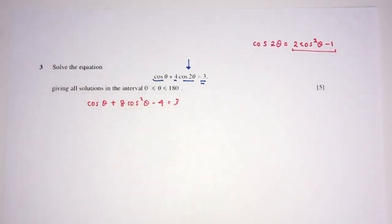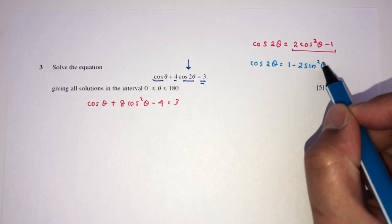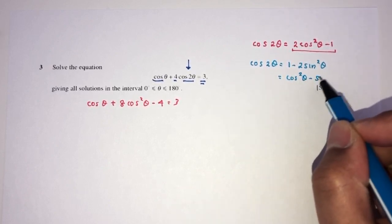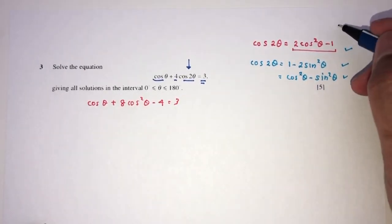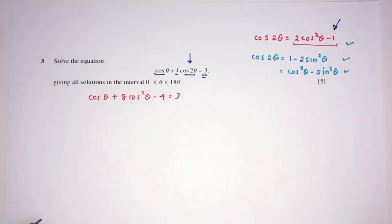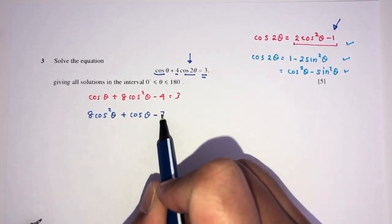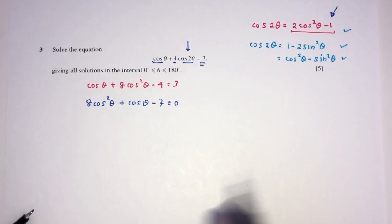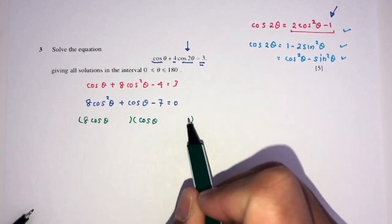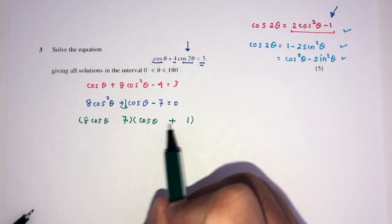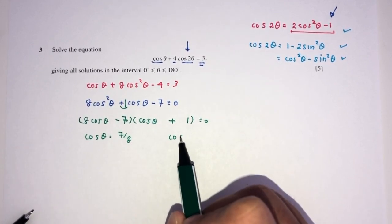We could have also used 1 − 2sin²θ or cos²θ − sin²θ, but choosing 2cos²θ − 1 directly makes things easier since the equation is in cos. Sending everything to one side: 8cos²θ + cosθ − 7 = 0. Factorizing this quadratic: (8cosθ − 7)(cosθ + 1) = 0. So cosθ has to be 7 over 8, and cosθ has to be minus 1.